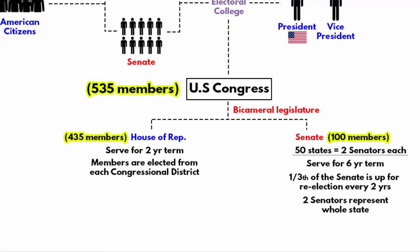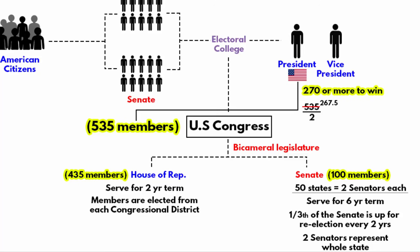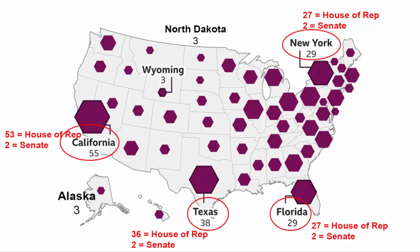Senators, however, represent the entire state. There are a total of 535 members in Congress — 100 serve in the US Senate and 435 serve in the US House of Representatives. That means a presidential candidate needs to gain 270 or more votes to win the presidency. If you look at this map, you will notice that some states are allocated more Electoral College seats — for example, California, Texas, Florida, and New York.